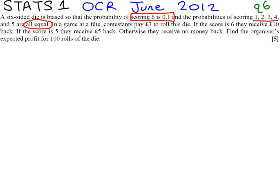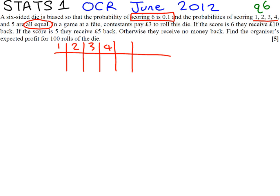Let's first think about that. We've got outcomes 1, 2, 3, 4, 5 or 6. We know the probability of getting a 6 is 0.1, so we have five other outcomes to consider. Don't forget that all probabilities have to add up to 1, so we do 1 take away 0.1 and divide that by 5, which gives us 0.18 for all the other probabilities.